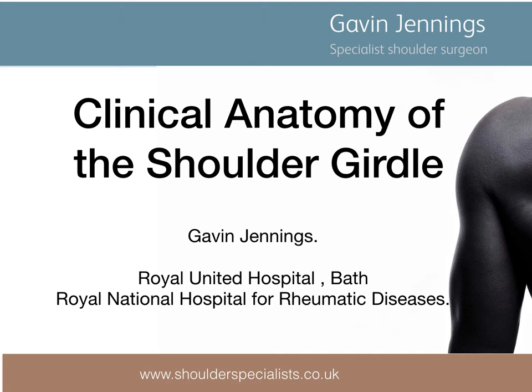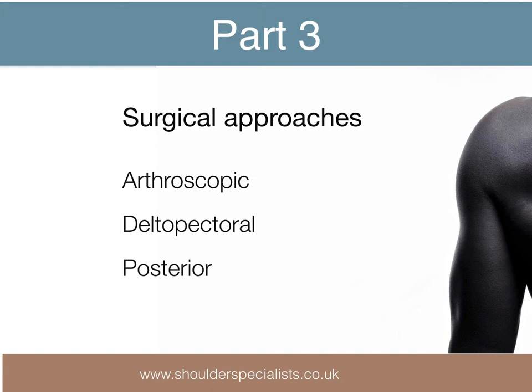My name is Gavin Jennings. I'm an orthopaedic surgeon specialising in the treatment of shoulder problems. This is the third part of a presentation on the clinically relevant anatomy of the shoulder and will cover surgical approaches. I will briefly discuss arthroscopic, then anterior and posterior open approaches.